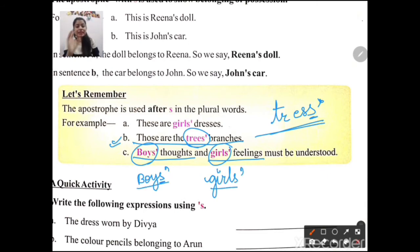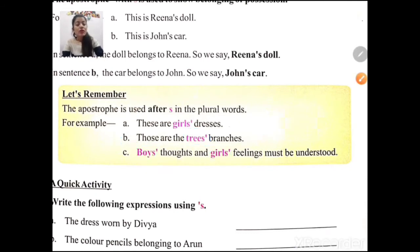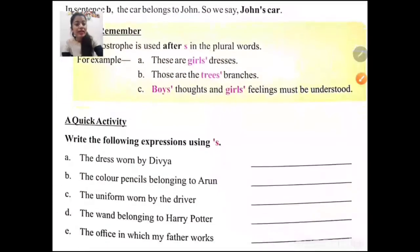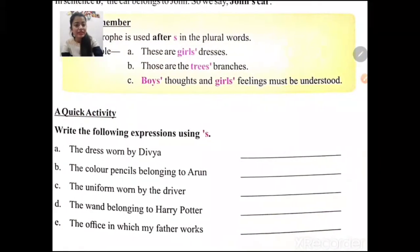In simple terms: with singular nouns we use apostrophe and 's' (apostrophe 's'), and with plural nouns we place the apostrophe after 's'. Now let us solve an activity from your book.